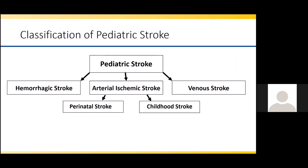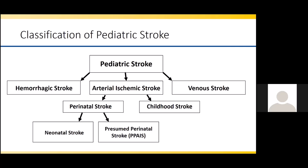Returning to our classification, we'll now focus on perinatal stroke. Perinatal stroke is stroke that occurs between 20 weeks of gestation and 28 days of life. Perinatal stroke is further broken down into two different categories based on the way the stroke presents: neonatal stroke and presumed perinatal stroke, or presumed perinatal arterial ischemic stroke (PPAIS).